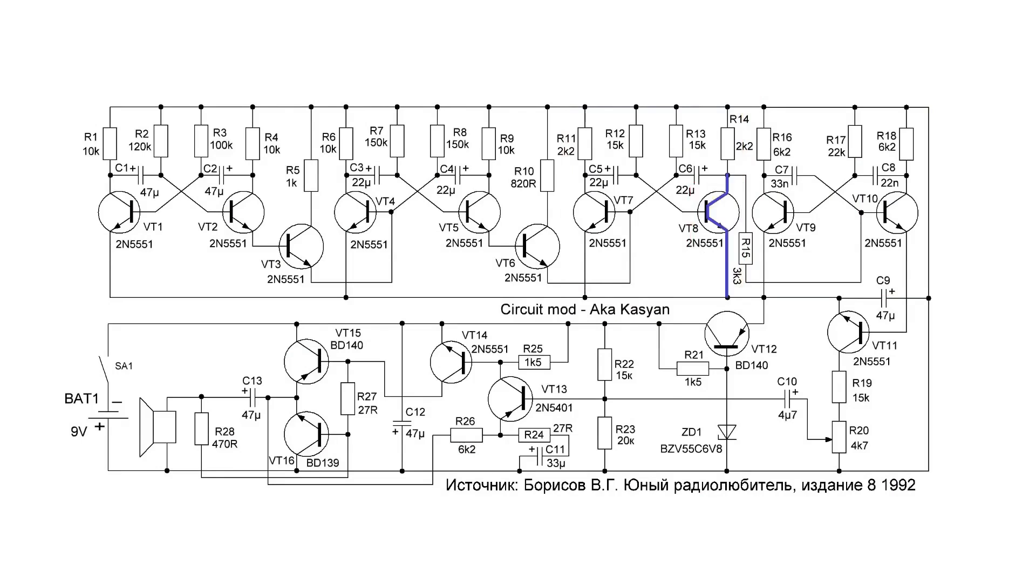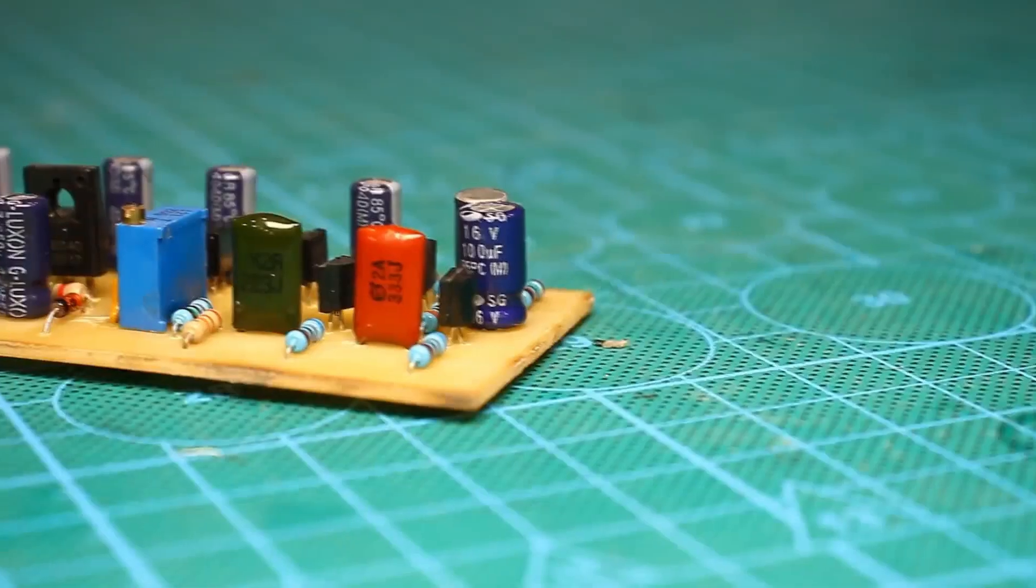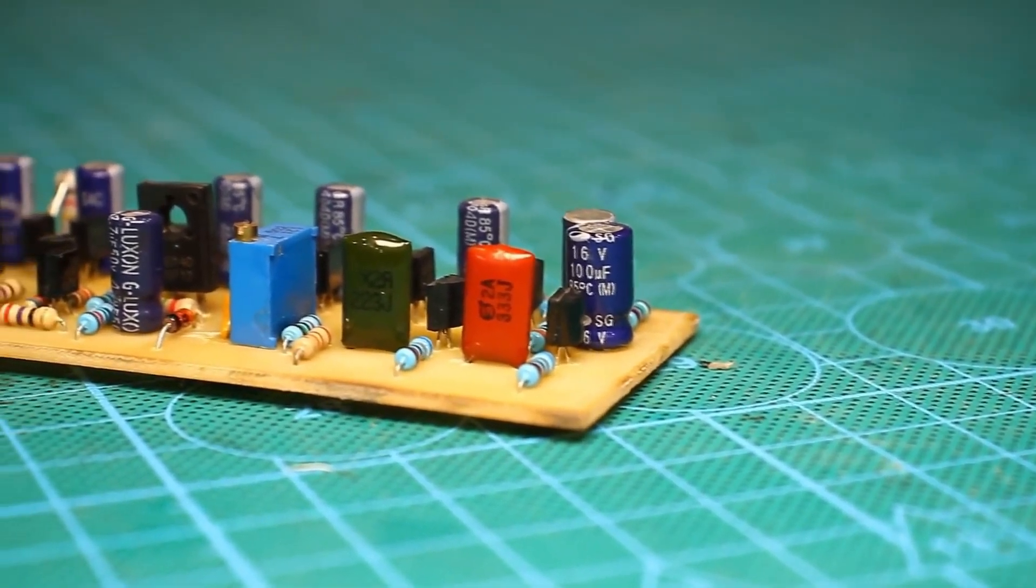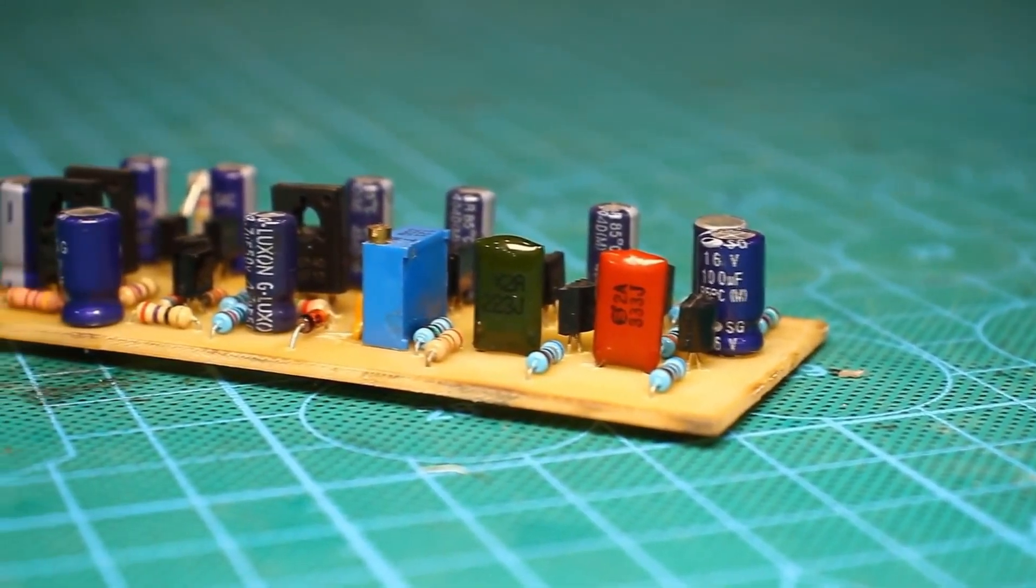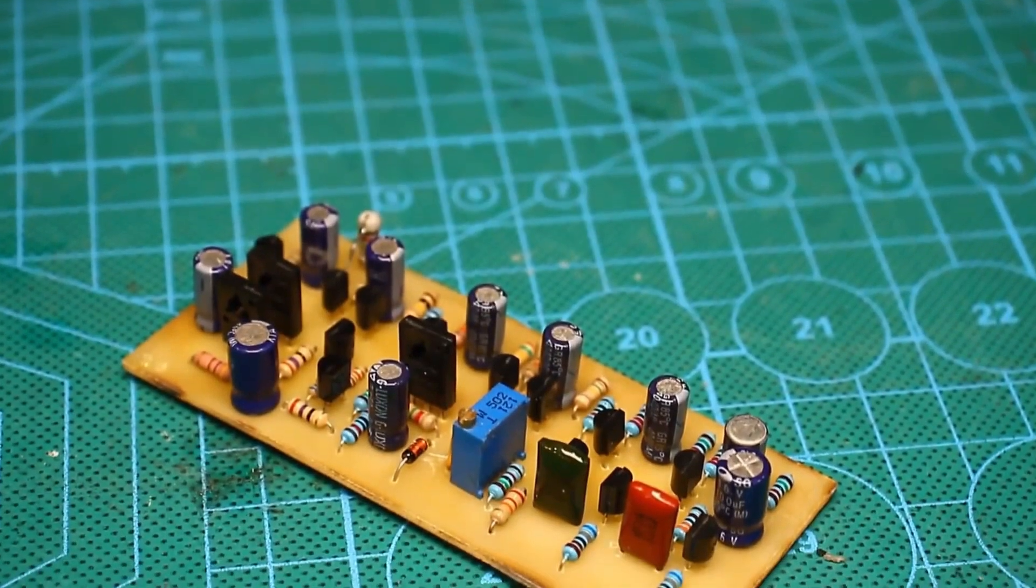Its operation is controlled by the neighboring one. When the specified transistor of the multivibrator is open, it grounds the base signal of one of the transistors of the neighboring multivibrator, thereby turning it off. In turn, this multivibrator is controlled by the subsequent multivibrator. And so on. Thus, each multivibrator suppresses the operation of the neighboring one exactly at the frequency at which it operates.